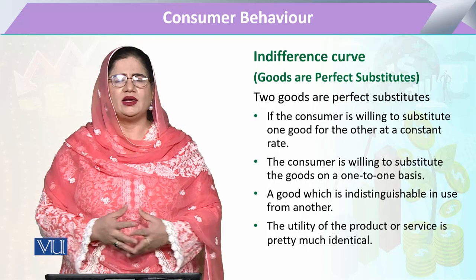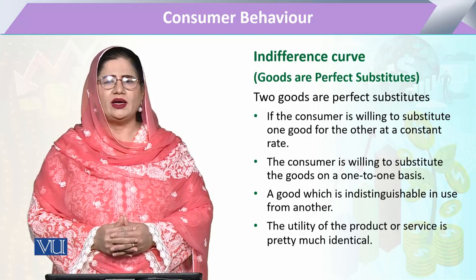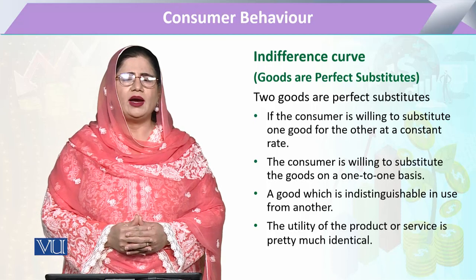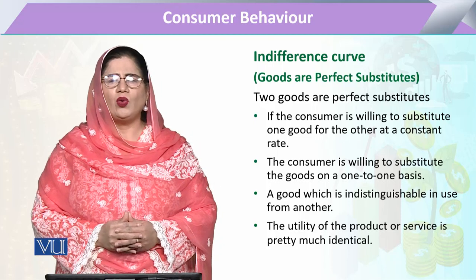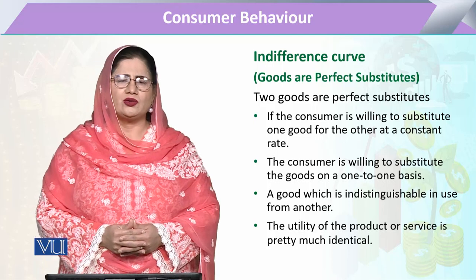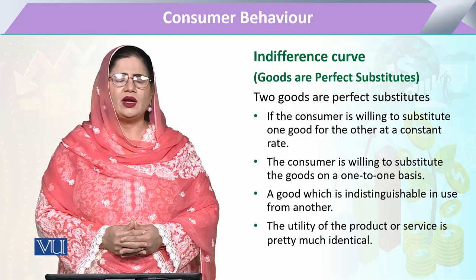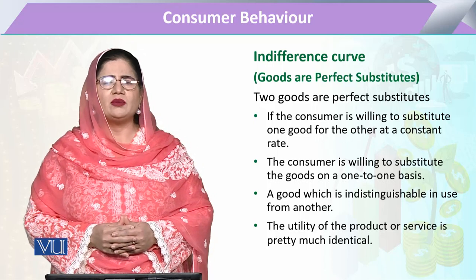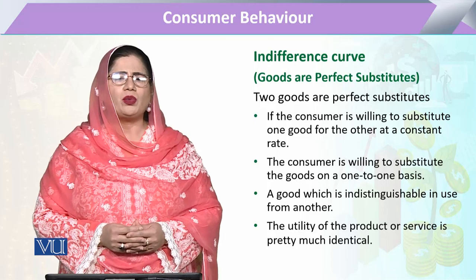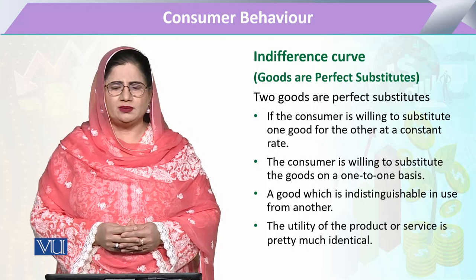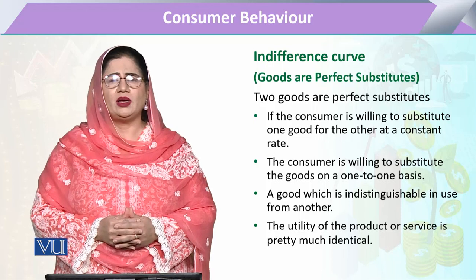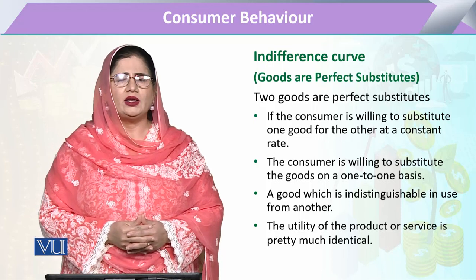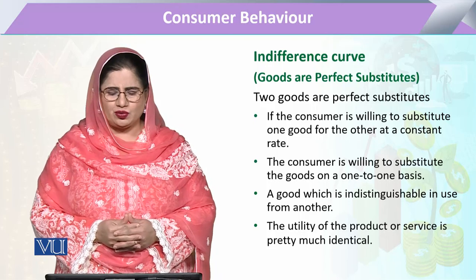If there is a case when a consumer has to decide consumption and among the bundles he has one combination of goods x1 and x2, where x1 and x2 are perfect substitutes to each other — then the question arises: what will be the properties of these commodities? In other words, what features make two commodities perfect substitutes?